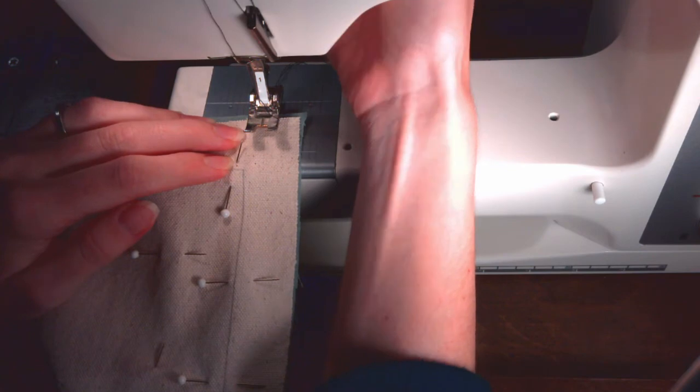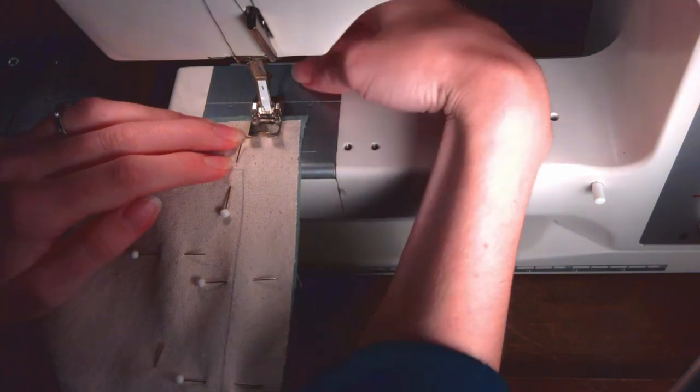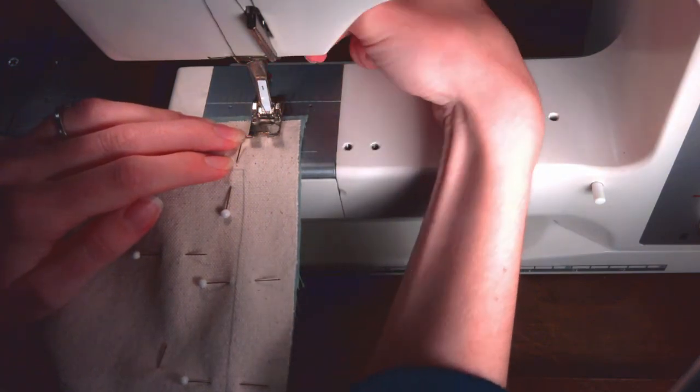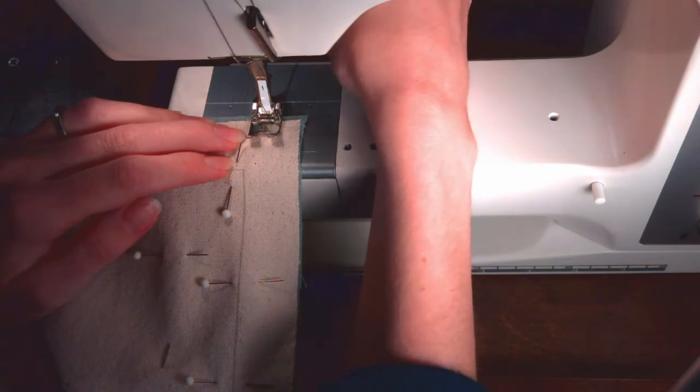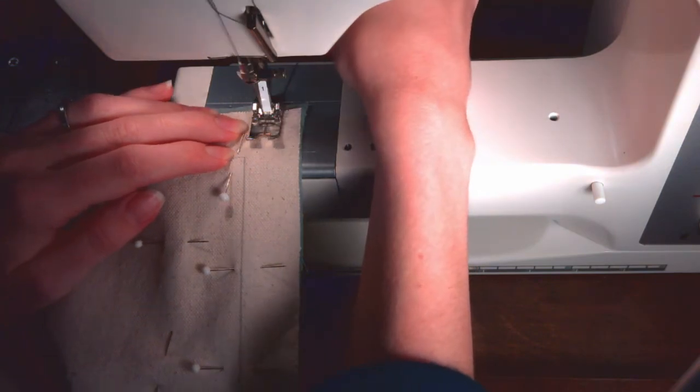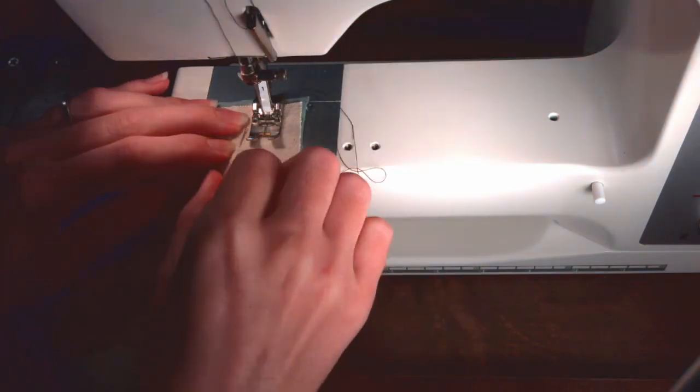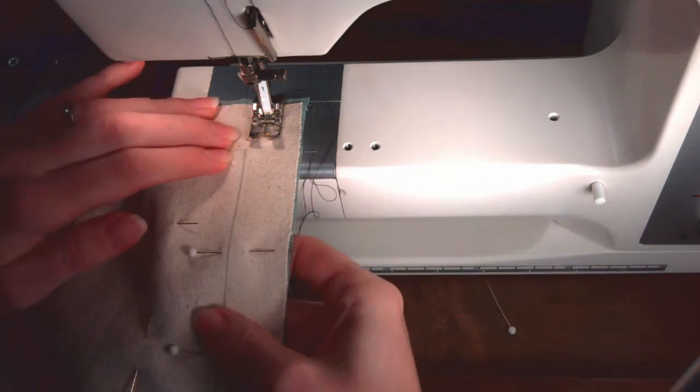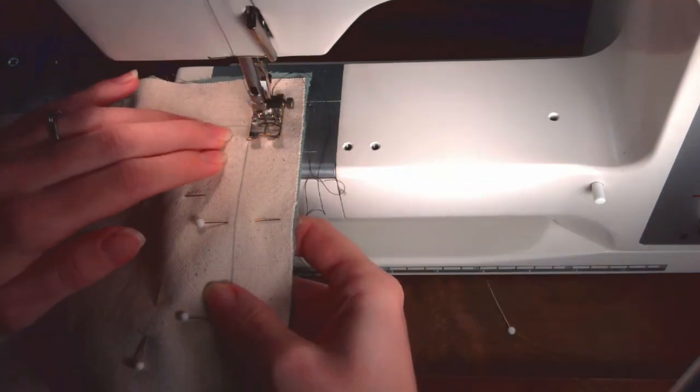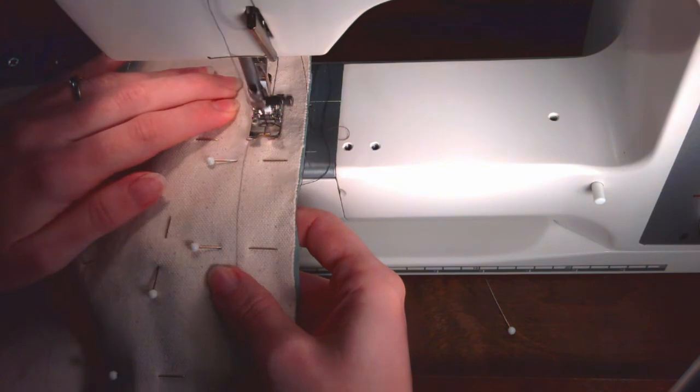Put the presser foot down, hold the two threads for the first couple of stitches, and stitch along from one edge of the fabric to the other. Stop and remove any pins in the path of the presser foot. Do not back stitch at the beginning or end.